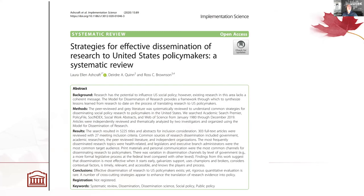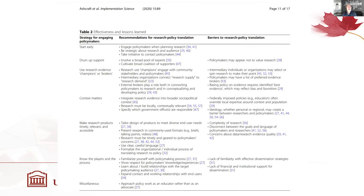This review of dissemination strategies to US policymakers found the following approaches are effective: start early and make those connections; drum up support and create coalitions; use research evidence champions and brokers — intermediaries who know both the research world and the policymaker world and can help communicate across the two. Pay a lot of attention to context — everyone asks whether research applies to the populations they work with, the rural vs. urban context, etc. Make research products timely, relevant, and accessible.